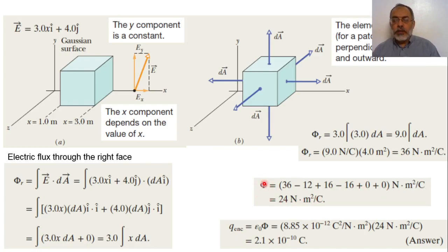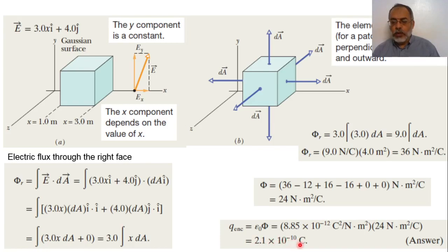Multiplying the total flux by epsilon-naught gives the total enclosed charge: Q_enclosed = epsilon-naught × phi = 8.85 × 10⁻¹² C²/(N·m²) × 24 N·m²/C = 2.1 × 10⁻¹⁰ C. The units check out: C²/(N·m²) × N·m²/C = C, confirming the result is in coulombs.